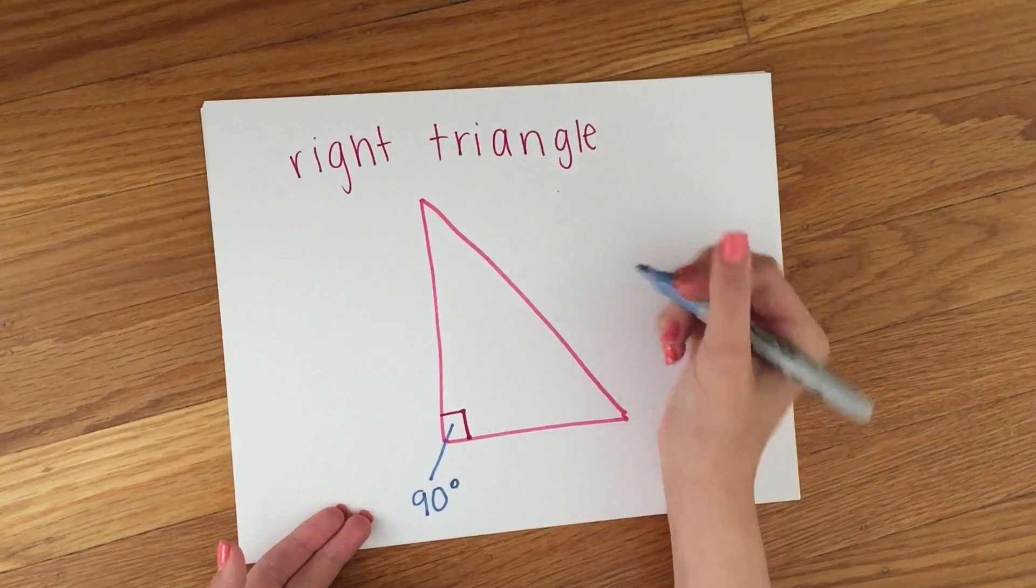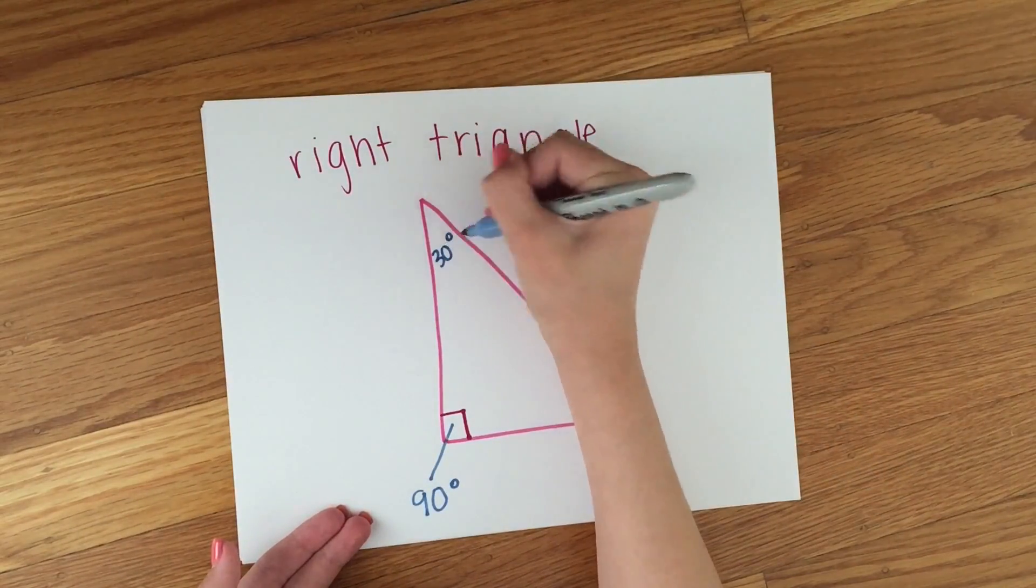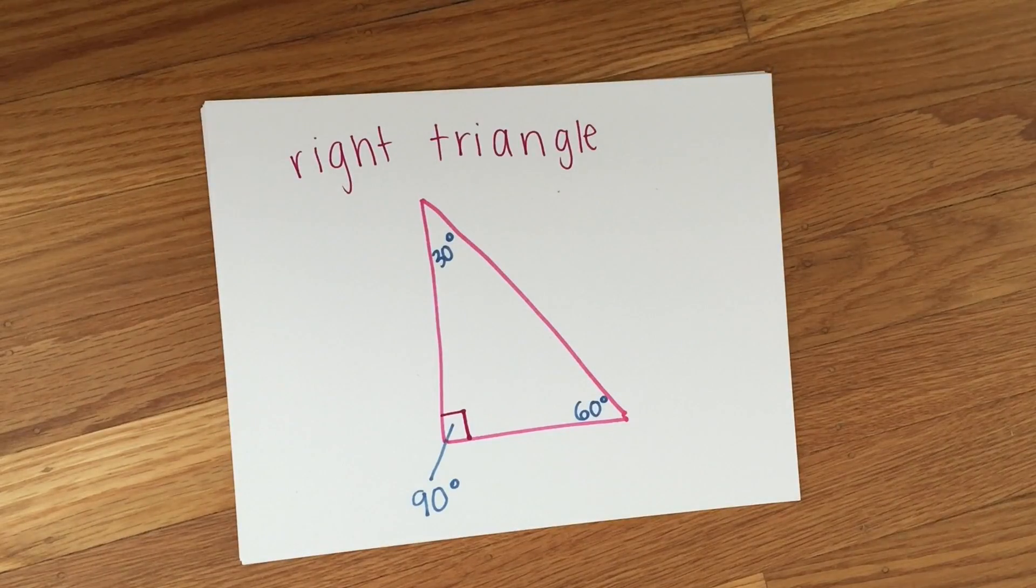A 30-60-90 triangle is a right triangle that has angles that are 30 degrees, 60 degrees, and 90 degrees.